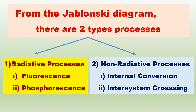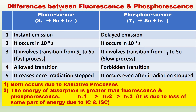Under radiative processes, there are two types: fluorescence and phosphorescence. Under non-radiative processes, there are also two types: internal conversion and inter-system crossing. Let us discuss the differences between fluorescence and phosphorescence.